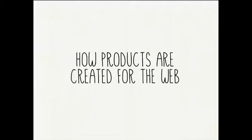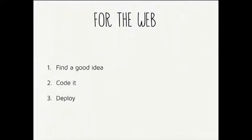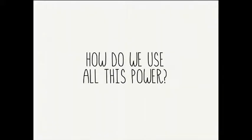But then the web came and things changed. How do we release products right now? Basically it's something like: find a good idea, code it, deploy it. The thing you need to understand is how much simpler it became to deliver something to millions. You don't need to buy a factory in China to produce something. You and your friends can code something over an evening and deliver it to millions and solve problems. But with all this immense power we have over the web and over the lives of people, how do we use those powers?